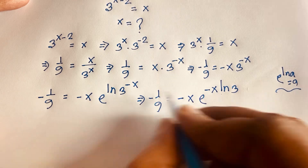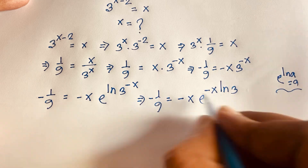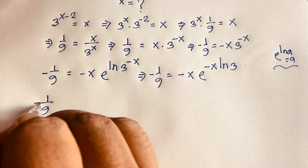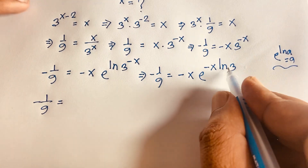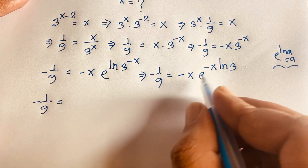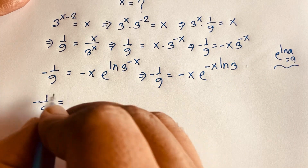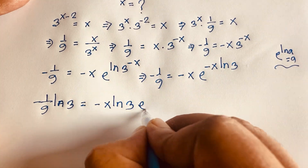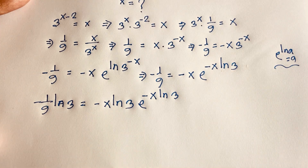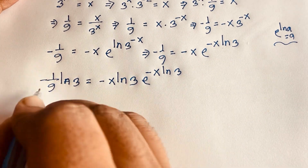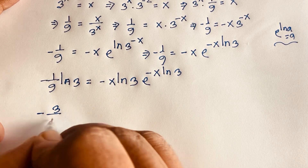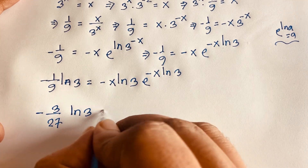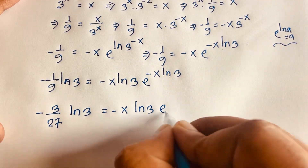I move the exponent in front according to logarithm rules. Then I multiply both sides by ln 3. So the left side becomes minus 1 over 9 times ln 3, and the right side becomes minus x ln 3 times e to the power minus x ln 3. Note that 1 over 27 equals 3 to the power minus 3, so ln of 1 over 27 will appear on the left.